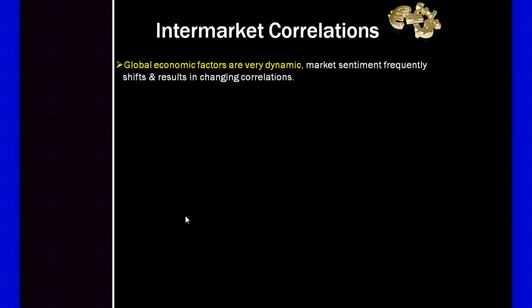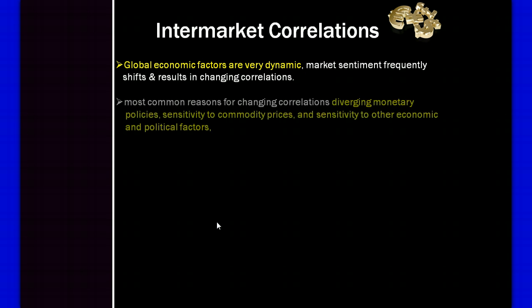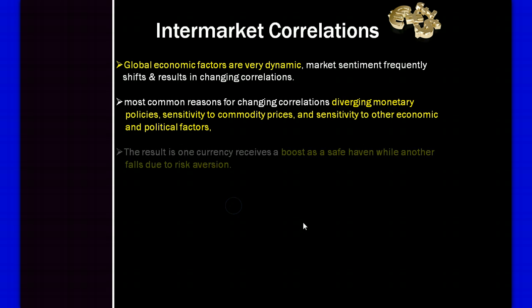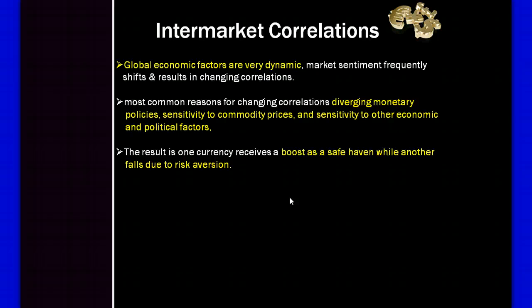Global economic factors are very dynamic, and market sentiment frequently shifts, resulting in changing correlations. The most common reasons for changing correlations are diverging monetary policies, sensitivity to commodity prices, and sensitivity to other economic and political factors. As a result, one currency normally receives a boost as a safe haven while another falls due to risk aversion.